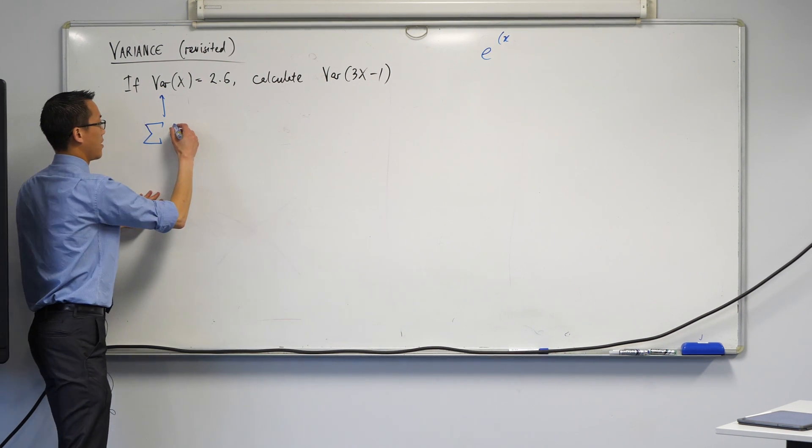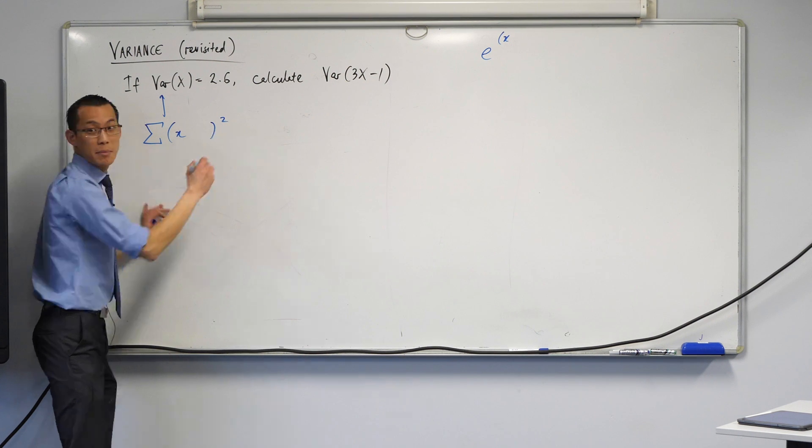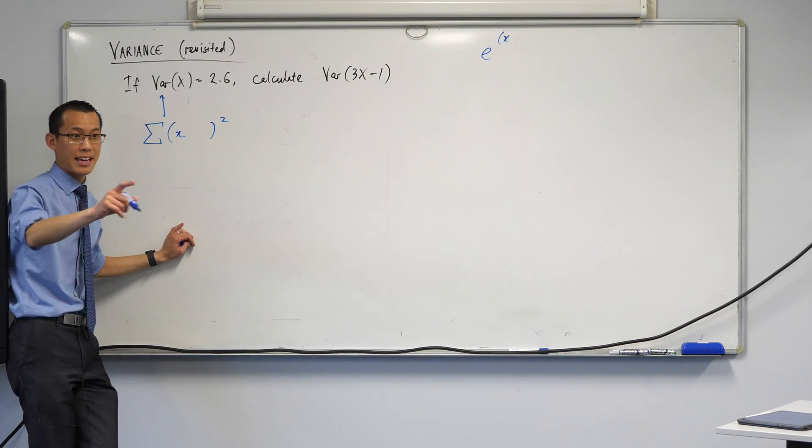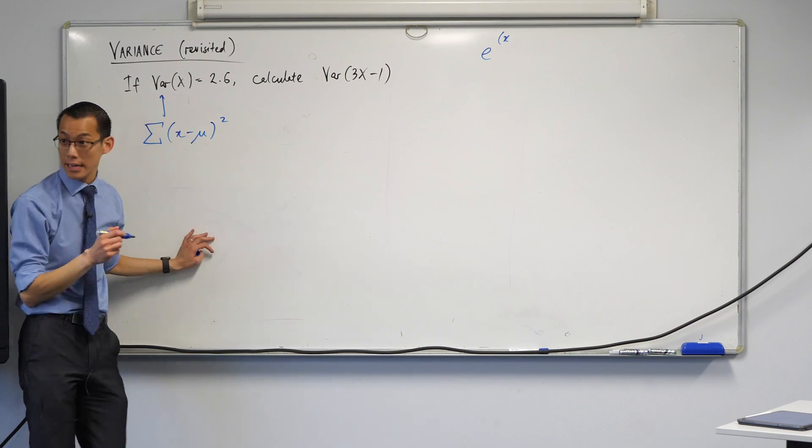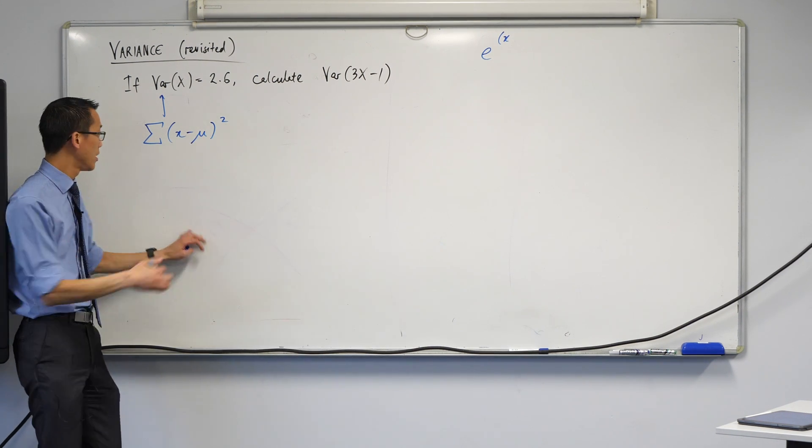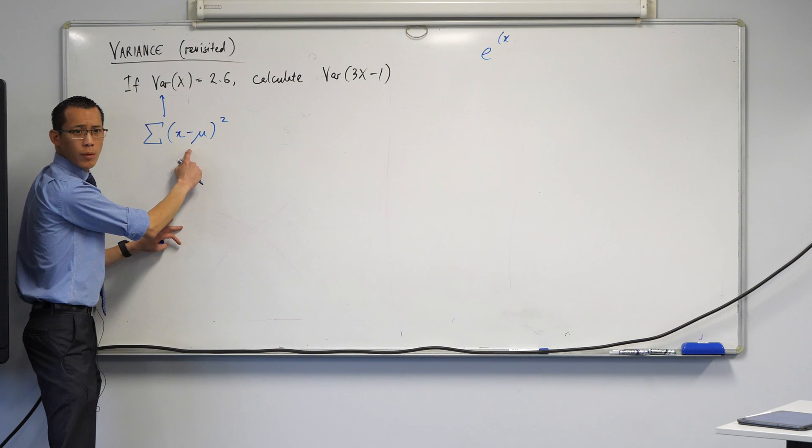Do you want to fill it out? Square. Pretty close. There is an x, and it is square, but there's something else that happens. So minus mu. What is mu again? This is the mean. We also call it the expected value, depending on the context we're in.